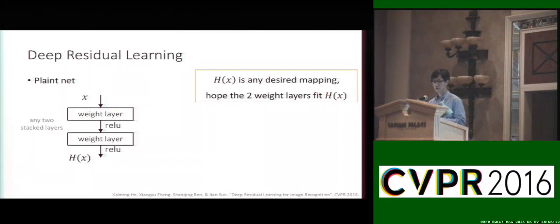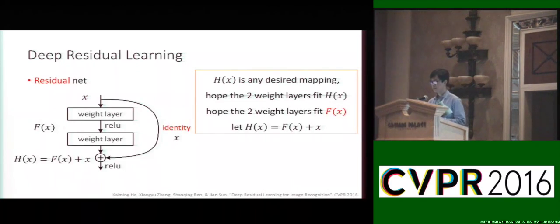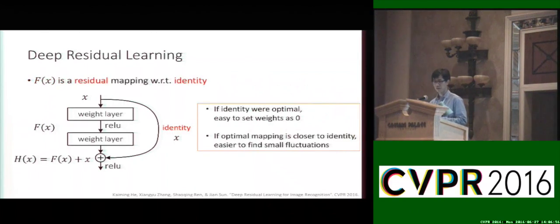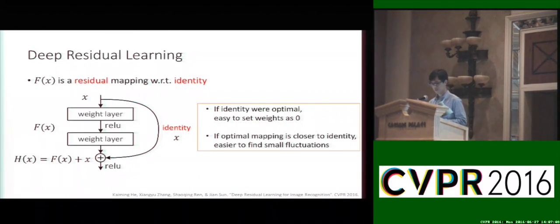This motivates us to propose a framework of deep residual learning. Consider a deep plain network where we use H(x) to denote the desired mapping to be fit by any two stacked layers. In our residual network, instead of hoping those layers to fit H(x), we hope them to fit another function F(x), and then let the output H(x) be the summation of F(x) and the input x. This can be realized by an identity shortcut connection from input to output of the residual block — we call F(x) the residual mapping with respect to identity. If the identity were optimal it could be easier to push weights toward zero; if the optimal mapping is close to identity it is easier to find small fluctuations around it.